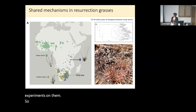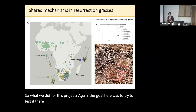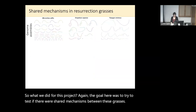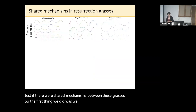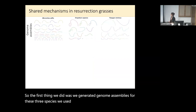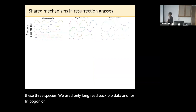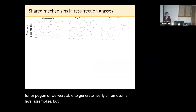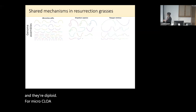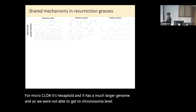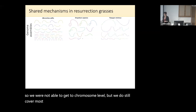For this project, the goal was to try to test if there were shared mechanisms between these grasses. The first thing we did was generate genome assemblies for the three species using only long-read PacBio data. For Tripogon and Oropetium, we were able to generate nearly chromosome-level assemblies — these species have relatively small genomes and are diploid. For Microfloa, it's hexaploid with a much larger genome, so we were not able to get to chromosome level, but we do still cover most of the gene space with this assembly.